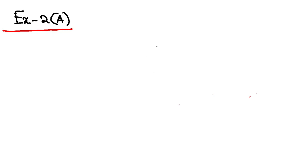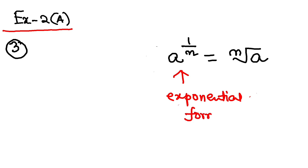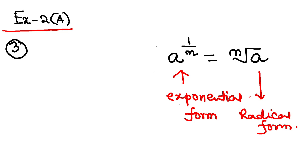Hello students, we can start solving question number 3 now. The question says express using radical sign. The concept I have already explained in the previous video — we have learned that a to the power 1 by n can be written as the n-th root of a. This is called the exponential form or index form, and if written using the root sign, this is called the radical form. Now let us go to question number 1 and try to express in radical form.